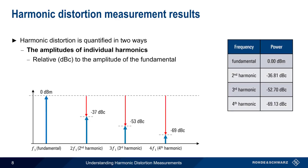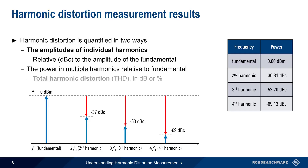The other way that harmonic distortion is quantified is as the combined power in multiple harmonics, relative to the power of the fundamental. This is referred to as total harmonic distortion, and can be reported either as a percentage or in dB.